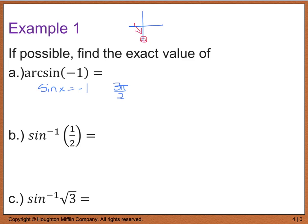On the unit circle, 3 pi over 2 is really the same as going the other way, which is negative pi over 2. Negative pi over 2 falls within the range of negative pi over 2 to pi over 2. So I'm going to use x equals negative pi over 2. The sine of negative pi over 2 gives me negative 1. Therefore, the arc sine of negative 1 equals negative pi over 2, and that's my final answer.